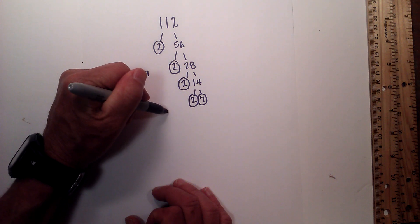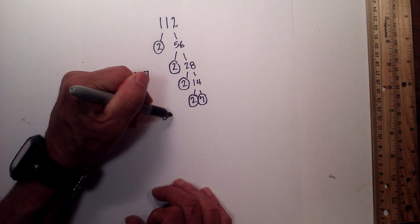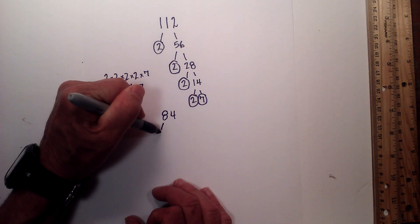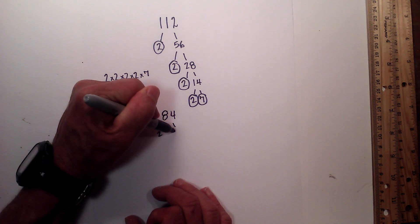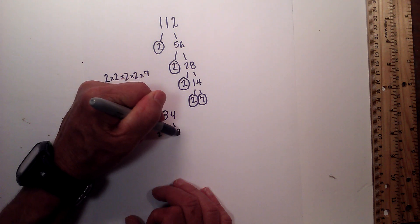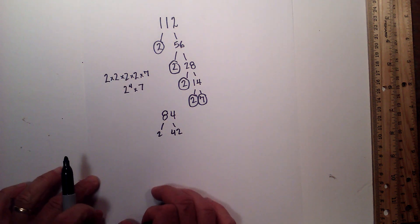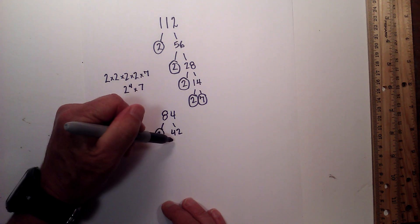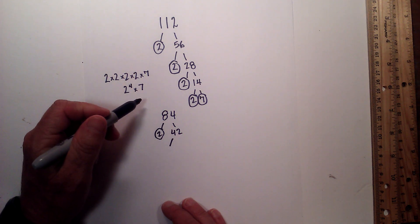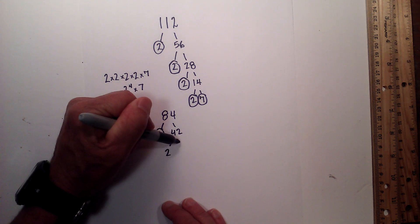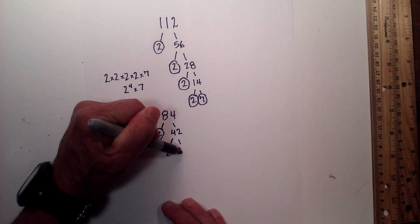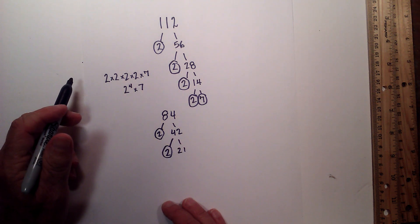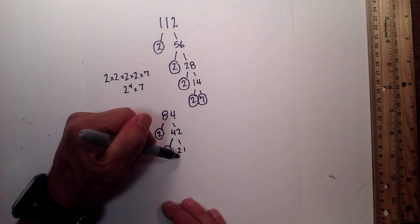Now let's tackle 84. We will begin with 2 times 42 equals 84. Circle the 2 because it is prime. Now 2 times 21 equals 42. Circle the 2 because it is prime.